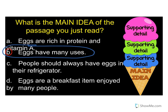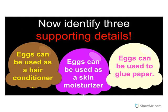If you look at the rest of the choices, you can easily see that is not what the whole paragraph was about. Eggs are rich in protein and vitamin A — yes, but that's not what the whole thing was about. People should always have eggs in the refrigerator — the whole passage did not go on to say all the reasons why the refrigerator is important for eggs. Now identify three supporting details: one, eggs can be used as a hair conditioner; two, eggs can be used as a skin moisturizer; three, eggs can be used to glue paper. All three of these details support the main idea that eggs have many uses.